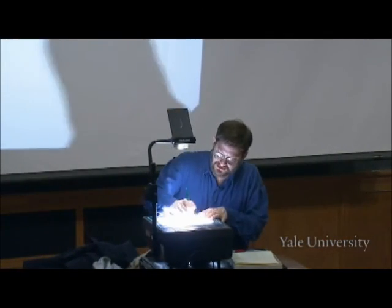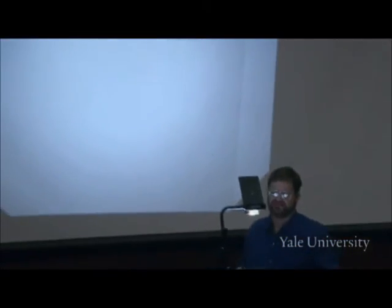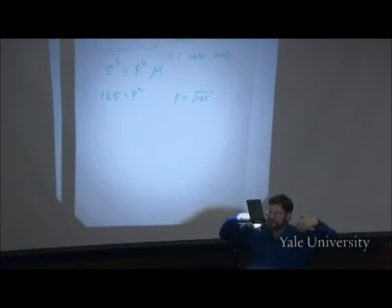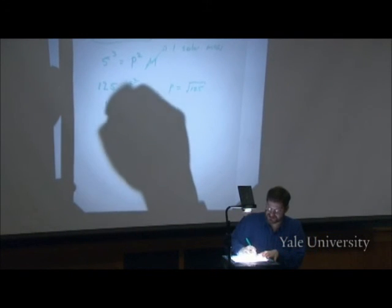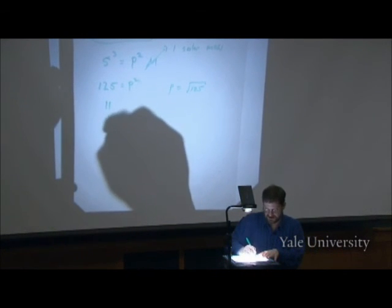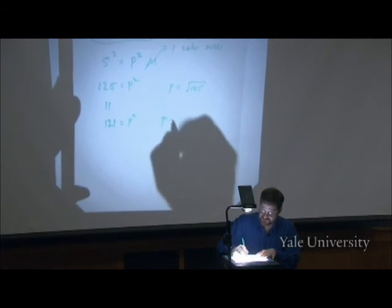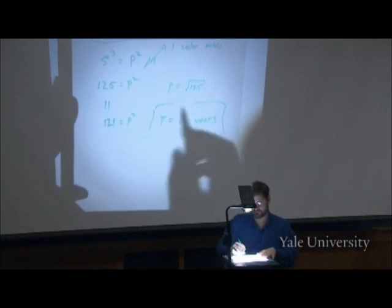And notice this. A of Jupiter is approximately 5. So 5³ is approximately 125. And it's just as good to say 121 is equal to the square of the period. And p = 11 years. That's the orbital period of Jupiter.